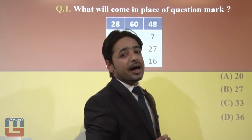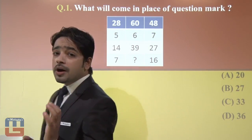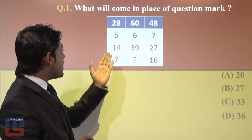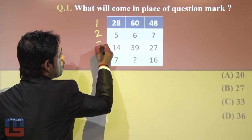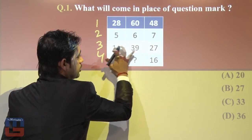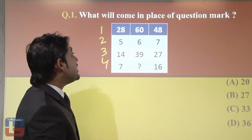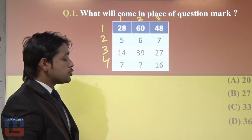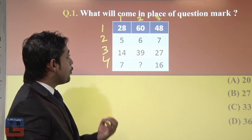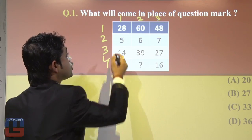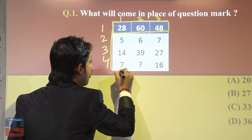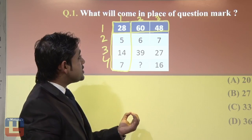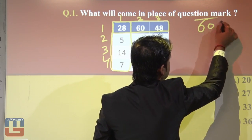Today's topic is missing number, and generally two or three questions will be asked in your examination from this topic. The key question is: how do you analyze and react to the question? In this question you can see four rows — first, second, third, and fourth row — and three columns: first, second, and third column.